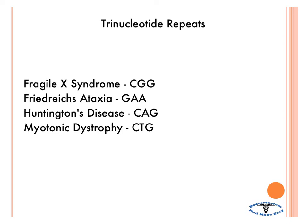So now we're going to talk about how to remember the different trinucleotide repeats. You have four that we need to focus on: Fragile X syndrome, Friedreich's ataxia, Huntington's disease, and myotonic dystrophy.